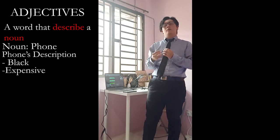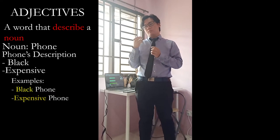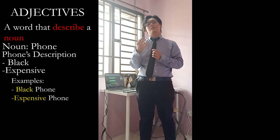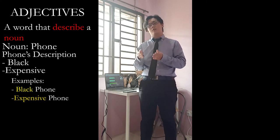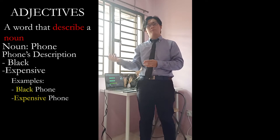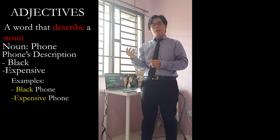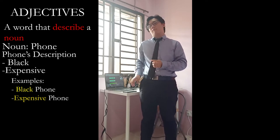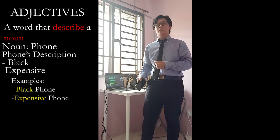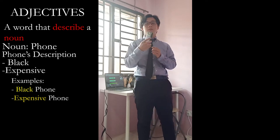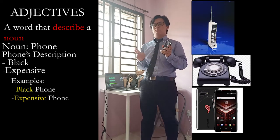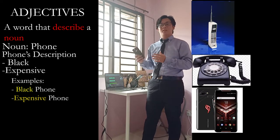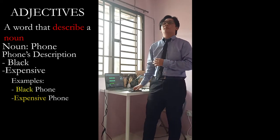Now, commonly, how one would use adjectives is to specify a noun, because nouns can come in many shapes and forms and share the same name. For example, back to the example — phone. Phone can come in many shapes and forms, like a Motorola.